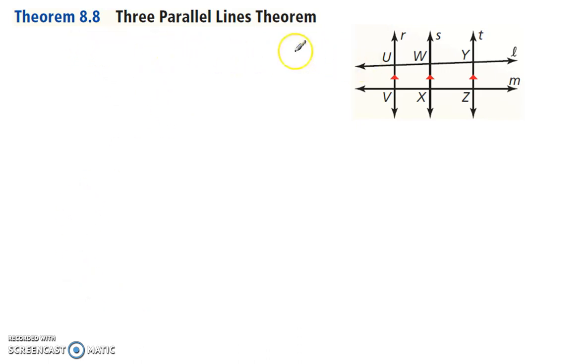Theorem 8-8 is the 3 parallel lines theorem. So previously we had a triangle. So we had a triangle like this, and we had a side, and then we had a side parallel. We said these two segments were proportional. Well, the same thing works if we have three lines like this. Imagine this was the triangle right here.